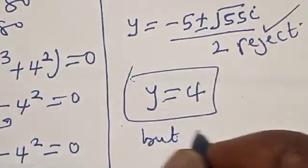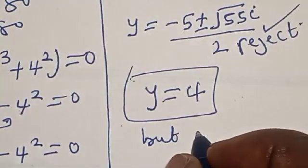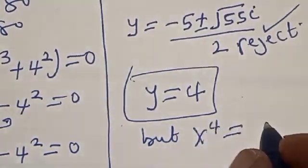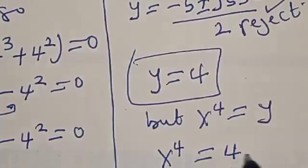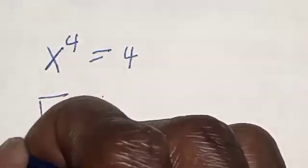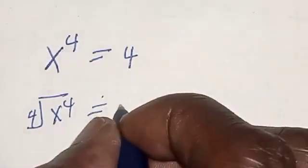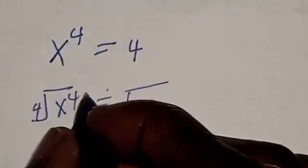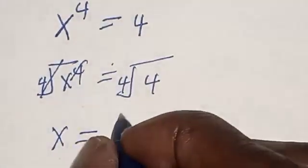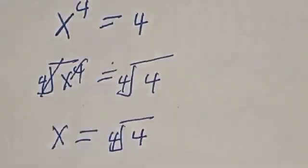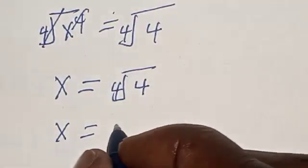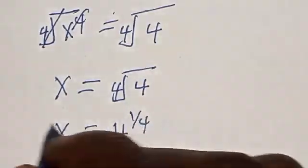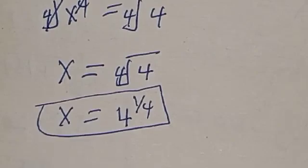But recall that x raised to power 4 is equal to y. Now x raised to power 4 is equal to 4. Taking the fourth root of both sides: the fourth root of x^4 equals the fourth root of 4. Therefore x equals the fourth root of 4, which is 4 raised to power 1 over 4. That is our final answer.